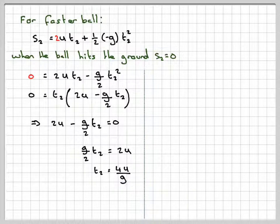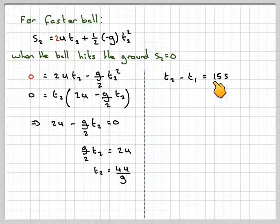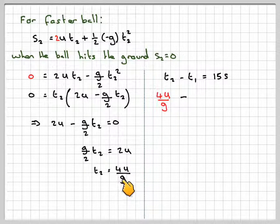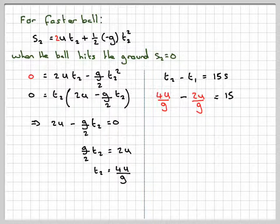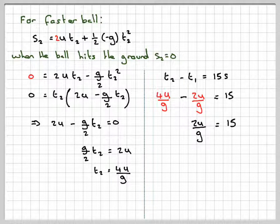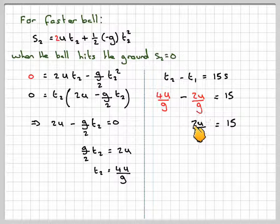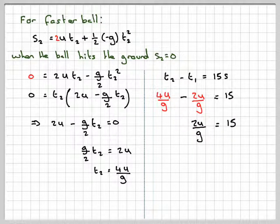Now we know the difference between t2, which is the time this one, the faster one hits the ground, and t1 is 15 seconds. So t2 minus t1 is equal to 15 seconds.